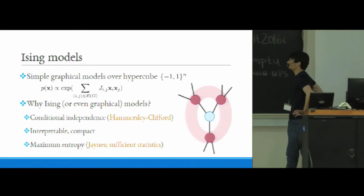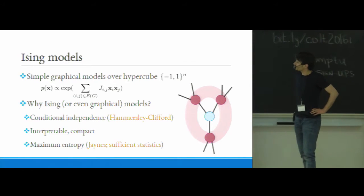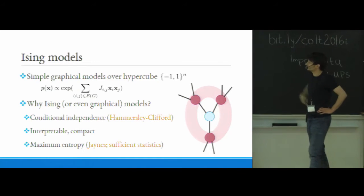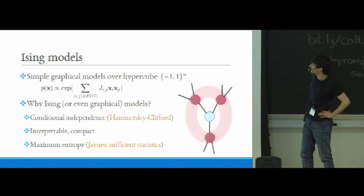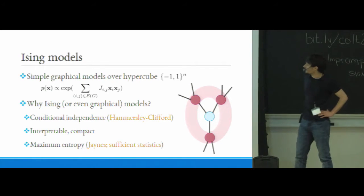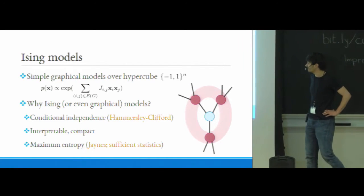So in fact, I'll actually talk about even very particular types of graphical models here for concreteness, which are Ising models. So these are distributions over the hypercube which have that particular exponential form written there. So basically it's just proportional to the exponential of the sum over the edges of some potentials J_ij times x_i x_j.